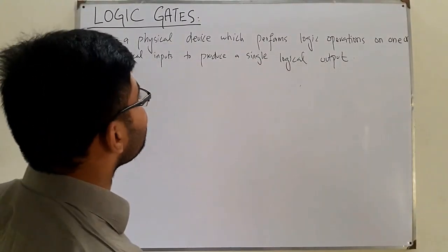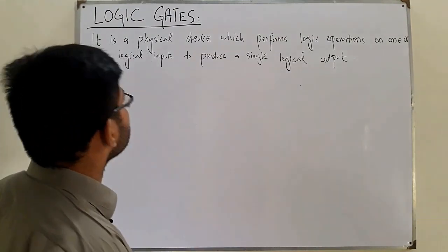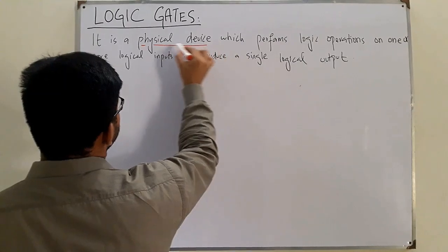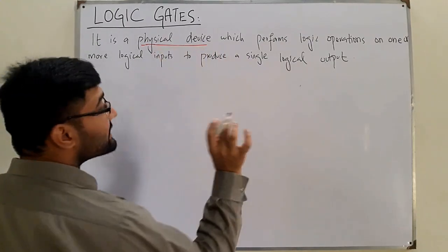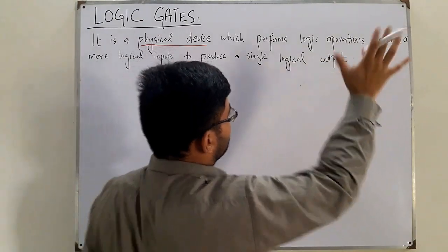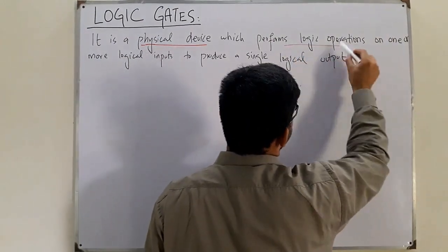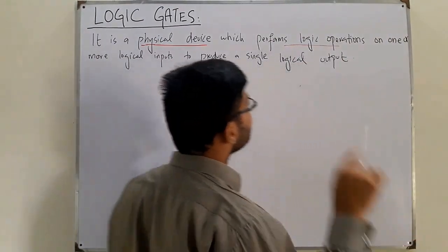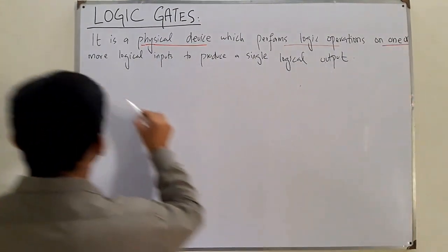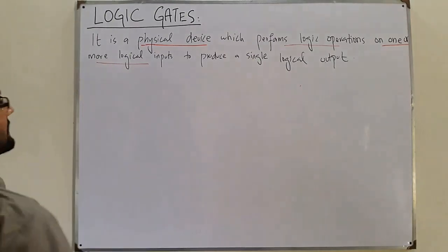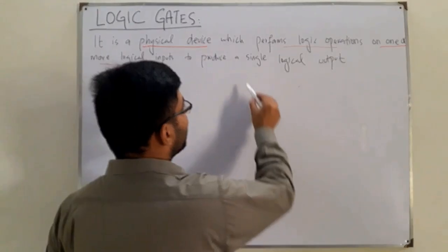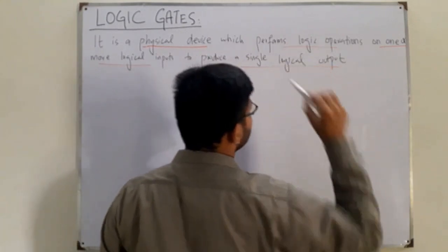When we focus on this definition, the very first point is that a logic gate is a physical device. It performs logic operations — we know that well. The next point is that it takes one or more logical inputs to produce a single output.